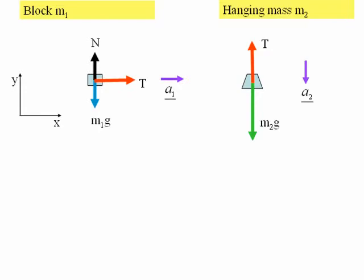Now consider the hanging mass M2. Again, ask yourself what forces are acting on that mass? Well there is the force of gravity acting downwards M2G and the tension in the string acting upwards, that's T. Notice we're going to choose our coordinate system so that the X direction is the horizontal direction and the Y direction is the vertical direction.